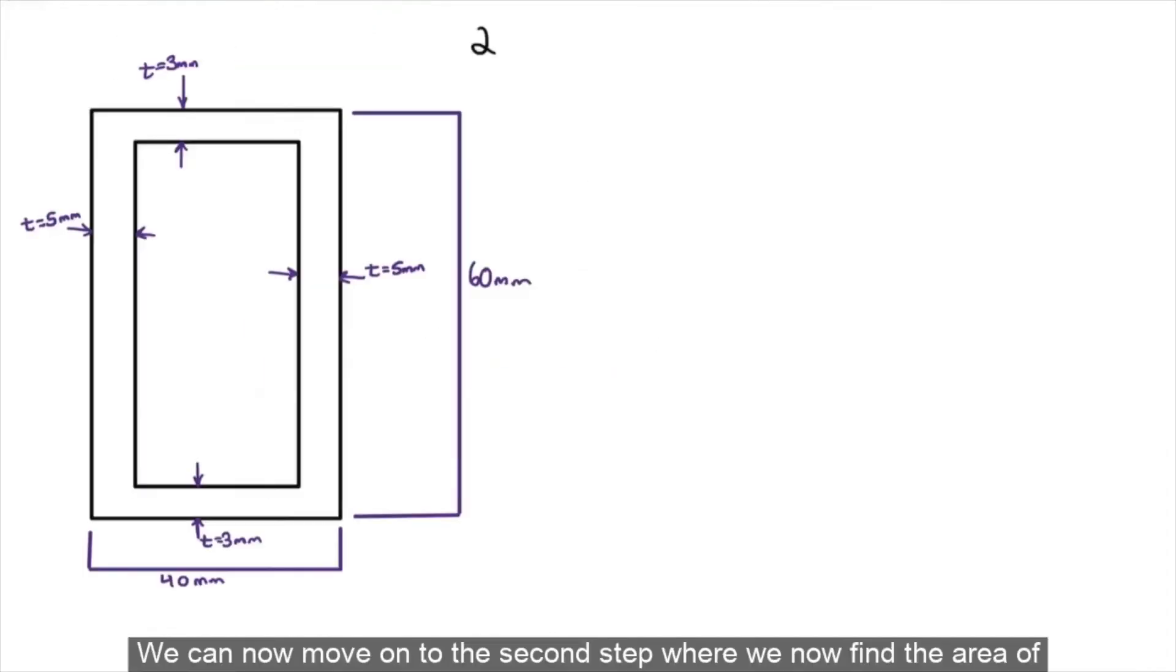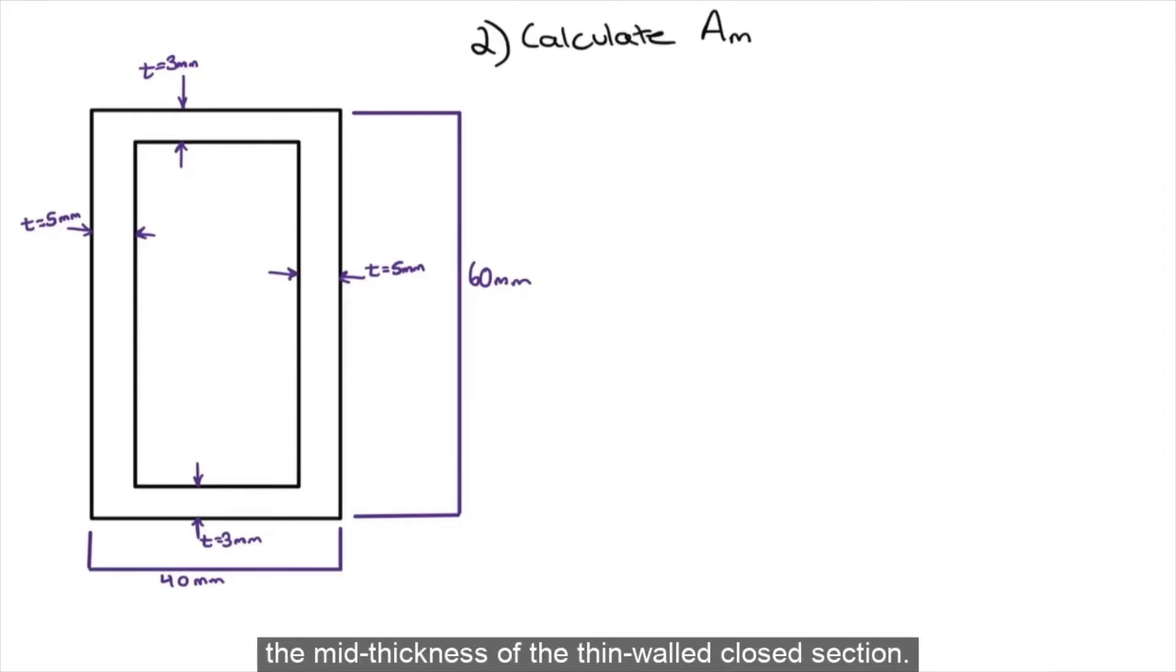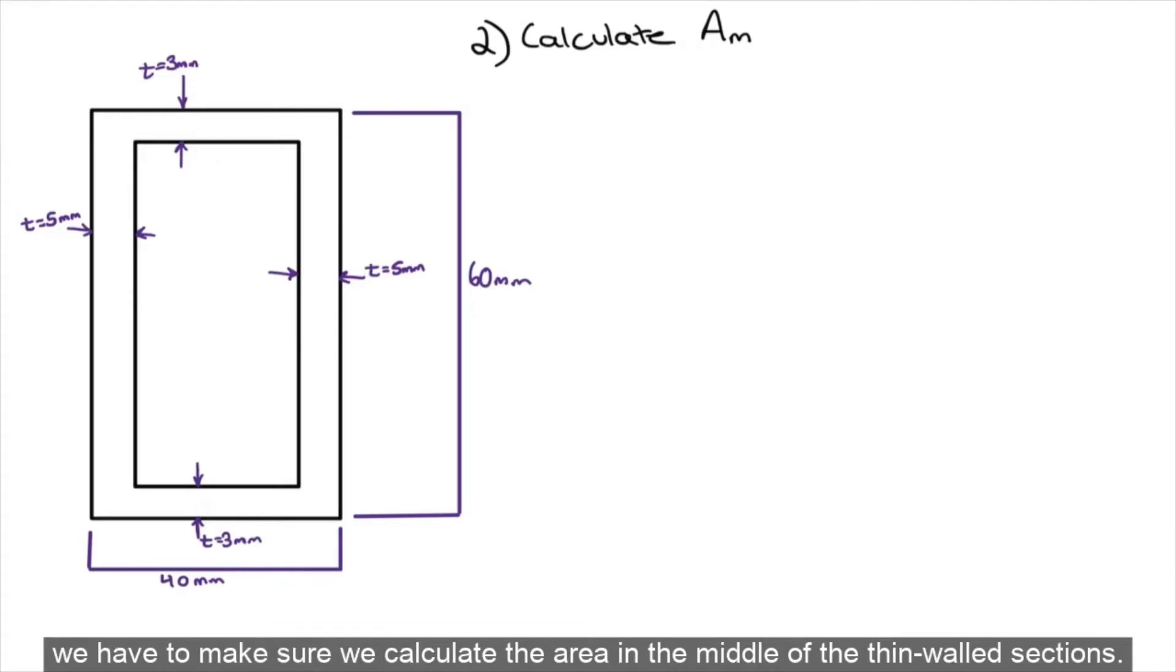We can now move on to the second step where we now find the area of the mid thickness of the thin walled closed section. A very important thing to note is that when we find the area of the mid thickness, we have to make sure we calculate the area in the middle of the thin walled sections.